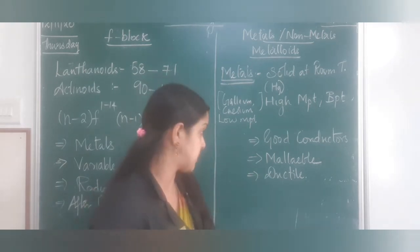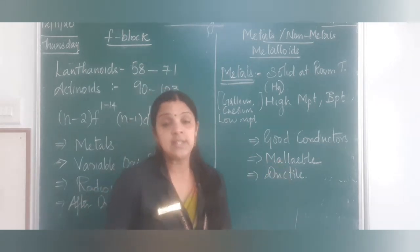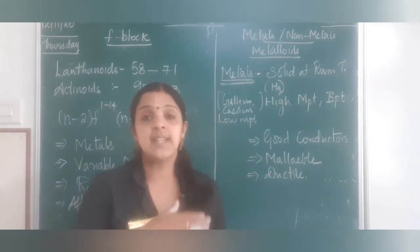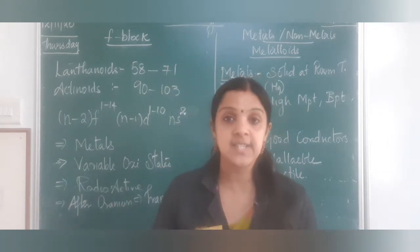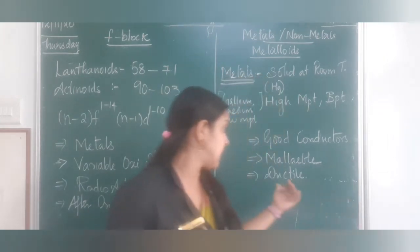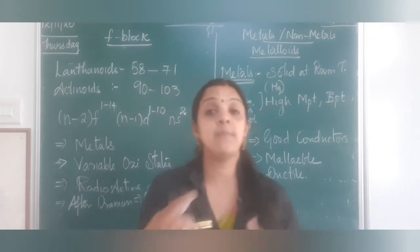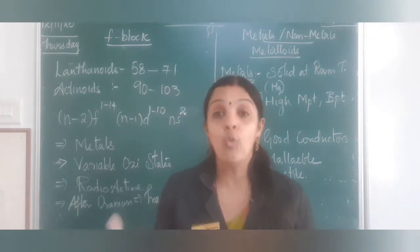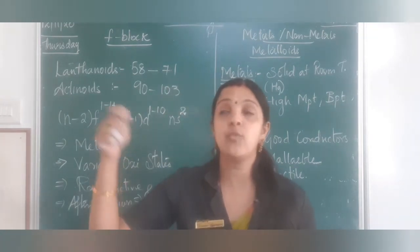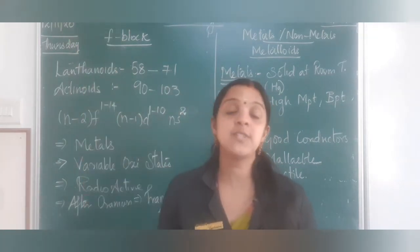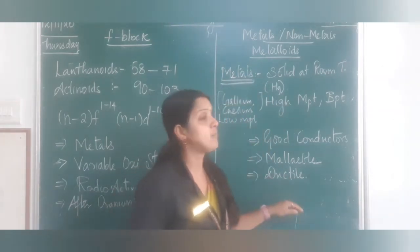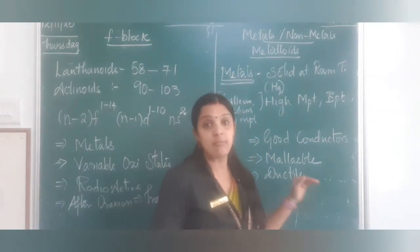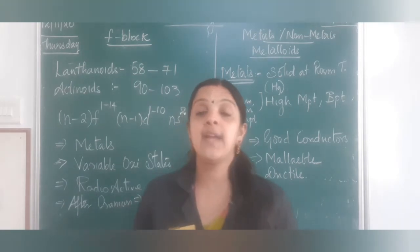Metals are malleable — meaning they can be drawn into thin sheets — and ductile, meaning they can be made into wires. That is how copper and aluminium wires are produced. These are the main properties of metals.